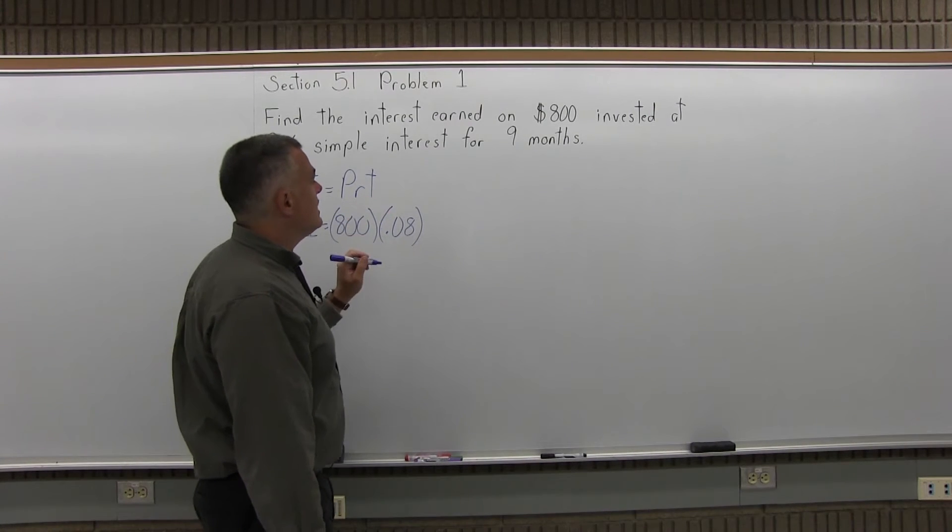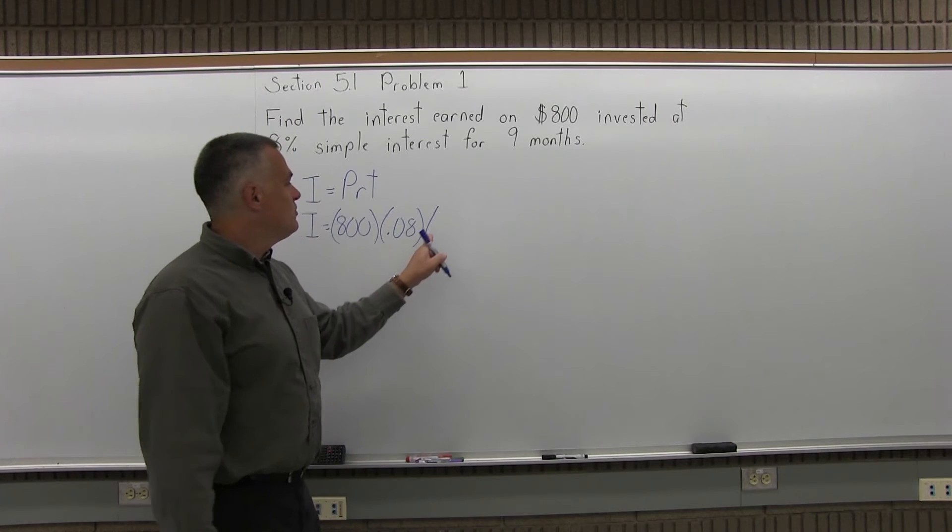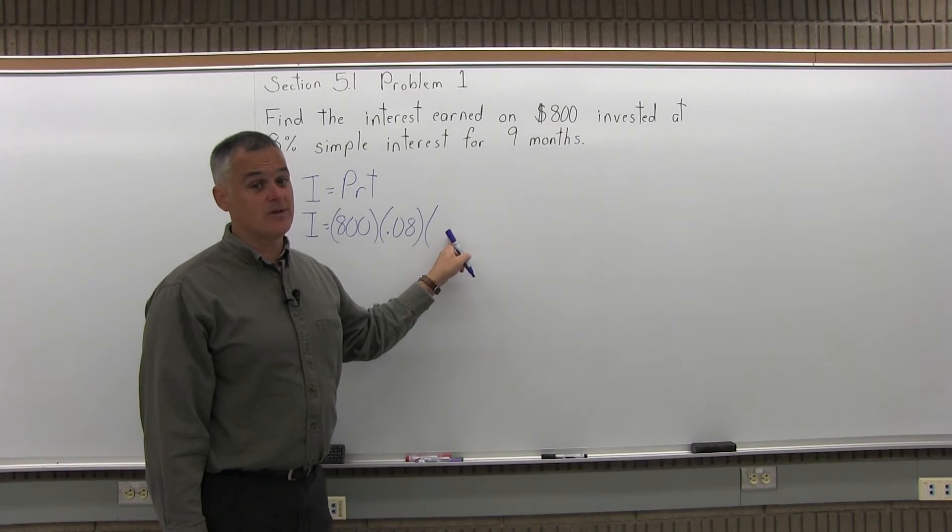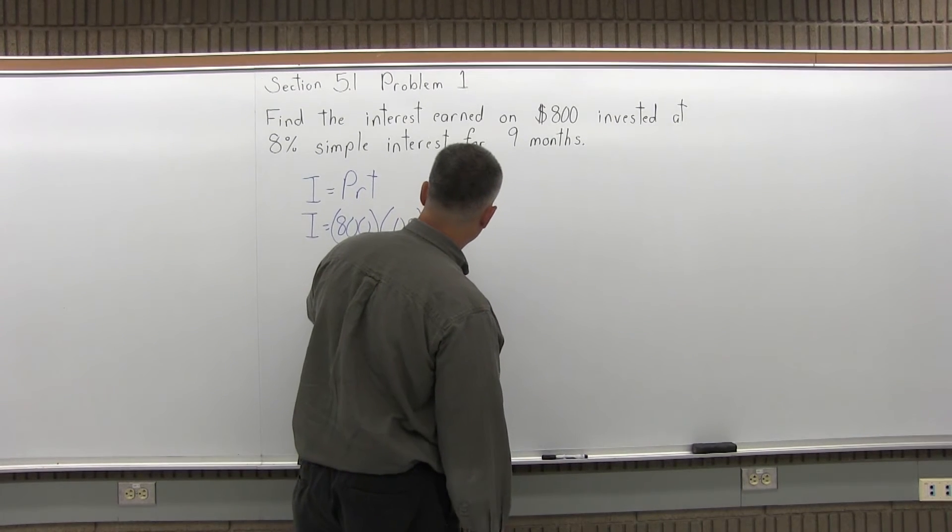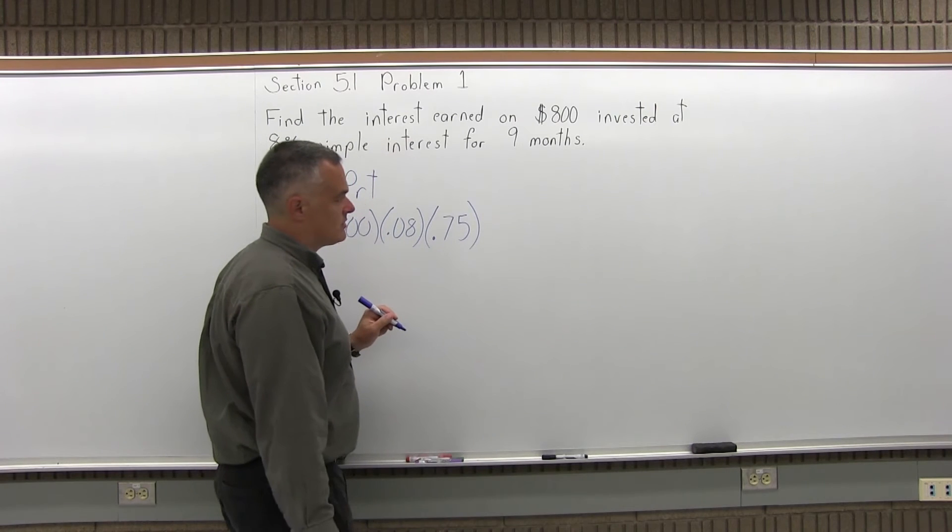And then the time in years. Now the question says 9 months. So if you put a 9 in the formula, the formula will think you're saving the money for 9 years. You have to turn that 9 months into 3 quarters of a year, 0.75. I happen to know off the top of my head that 9 months is 3 quarters of a year.